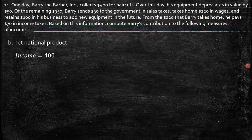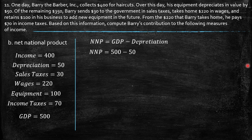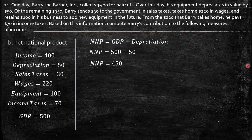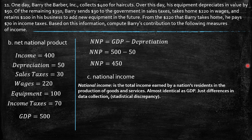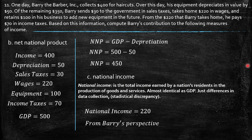Net national product: we know NNP equals GDP minus depreciation, so $500 minus $50 equals $450. National income: the total income earned by a nation's residents in the production of goods and services — almost identical to GDP, just differing in data collection, called the statistical discrepancy. From Barry's perspective, national income should be $320.